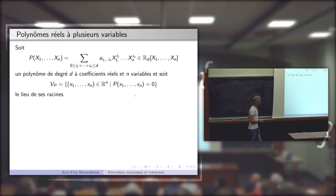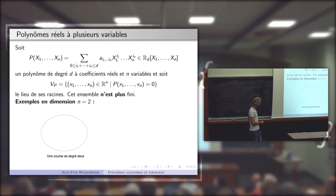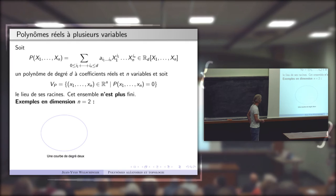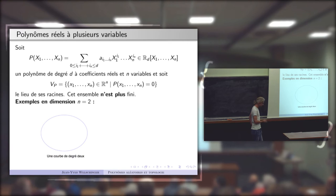Il faut être bien conscient que quand on augmente le nombre de variables, l'ensemble des racines en général n'est plus du tout fini. On a tous en tête des exemples en dimension 2 : les ellipses, qui sont des courbes de degré 2, ou le cercle — l'ensemble des racines du polynôme x² + y² − 1 = 0, un polynôme de degré 2 à deux variables dont l'ensemble des racines est une courbe dans le plan.